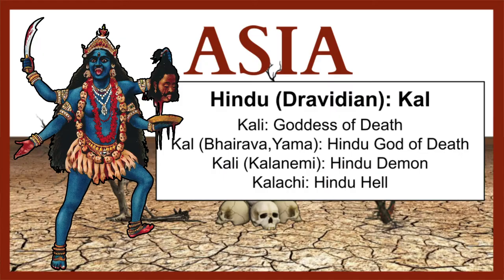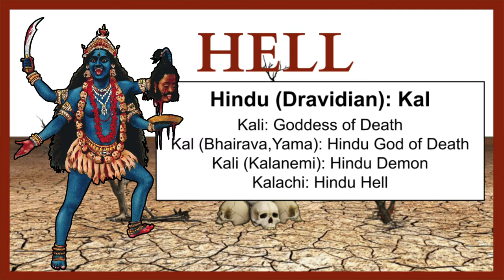In the Hindu or Dravidian spiritual system, dealing with Sanskrit and Indian cultures, they have 'Kal' — K-A-L — a very ancient form of this root. Kali is the goddess of Hindu mythology who is the goddess of death — the same principle and symbology as the previous goddesses in other cultures. Her name 'Kali' is associated with the word hell through the root, and it means darkness, time, and death.